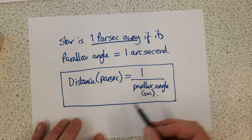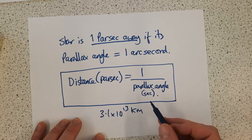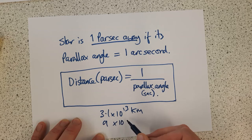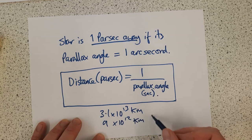A parsec is about 3.1 times 10 to the 13 kilometers, which is roughly about a light year, because a light year is 9 times 10 to the 12 kilometers. That's one light year.